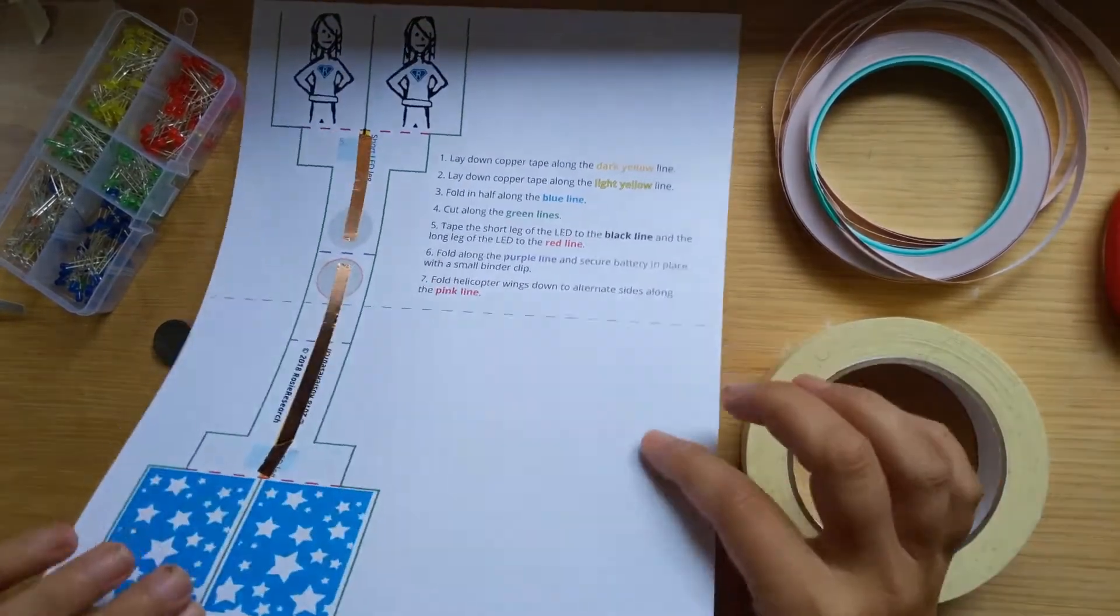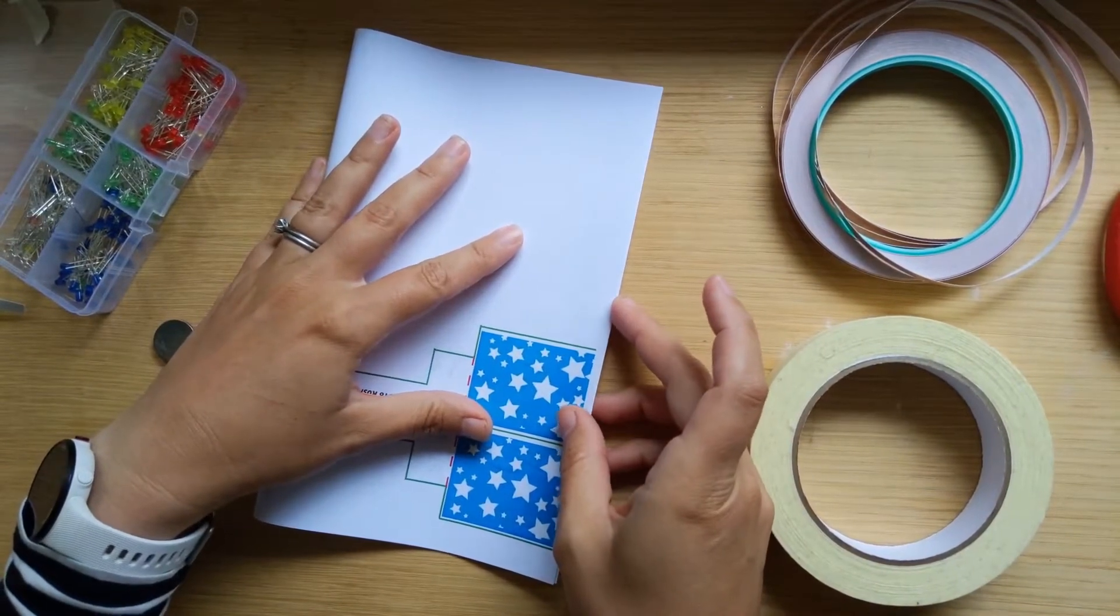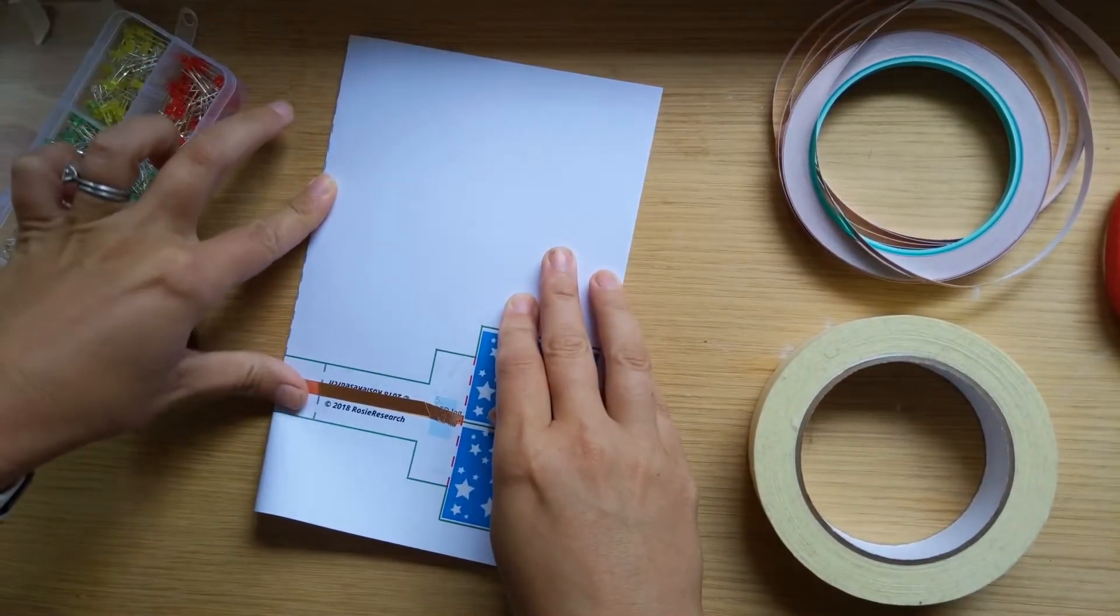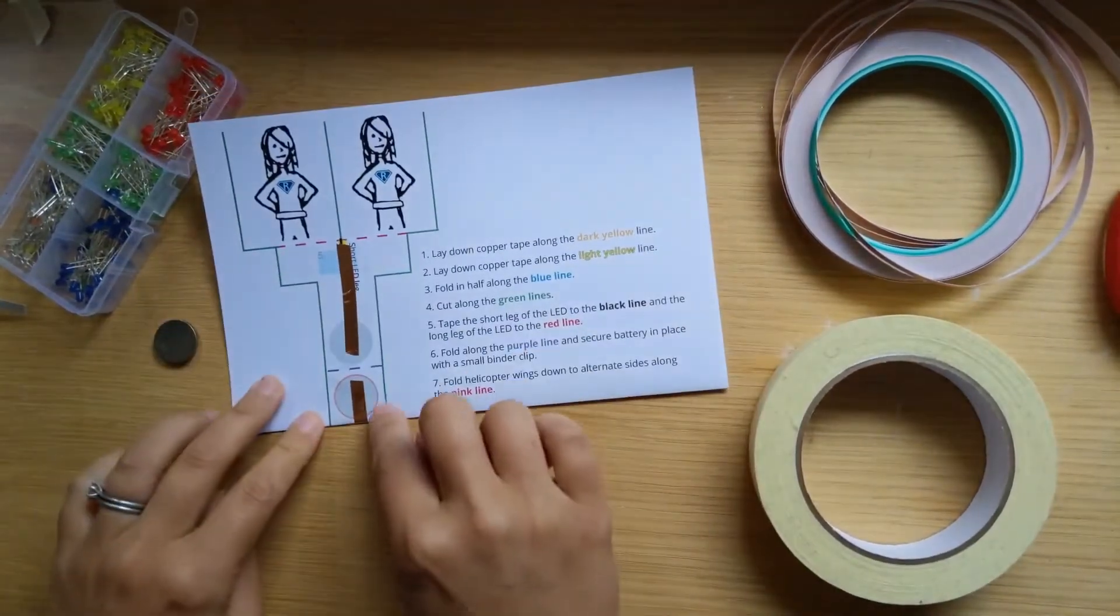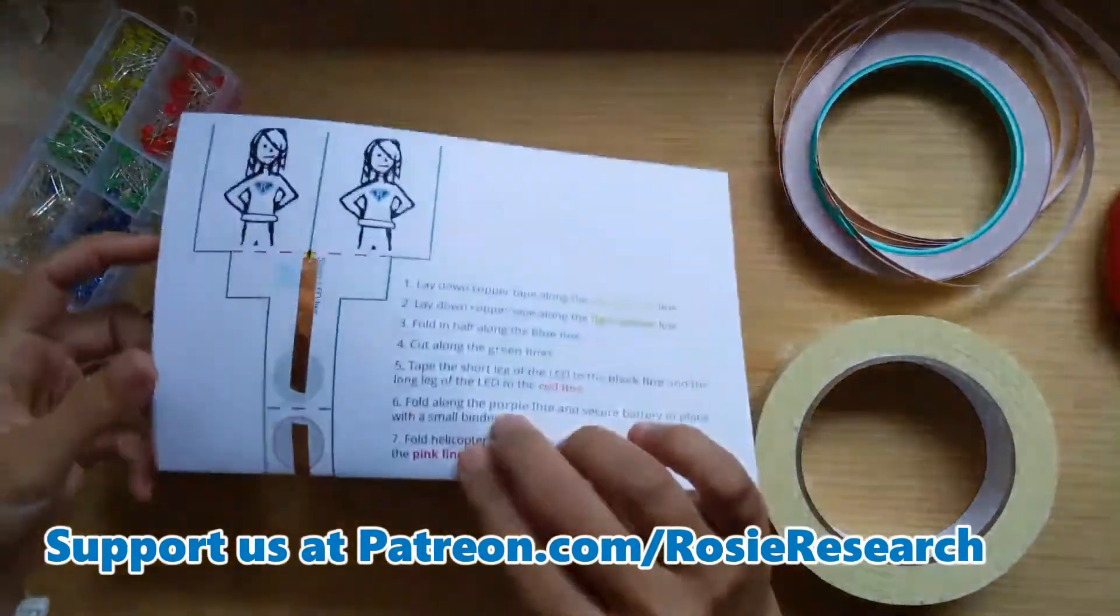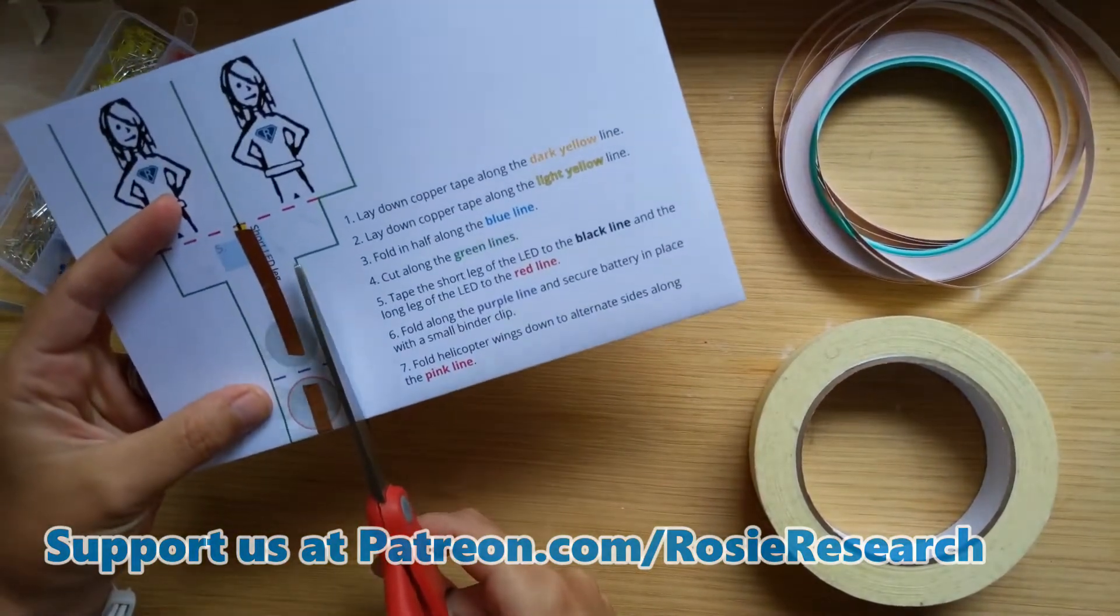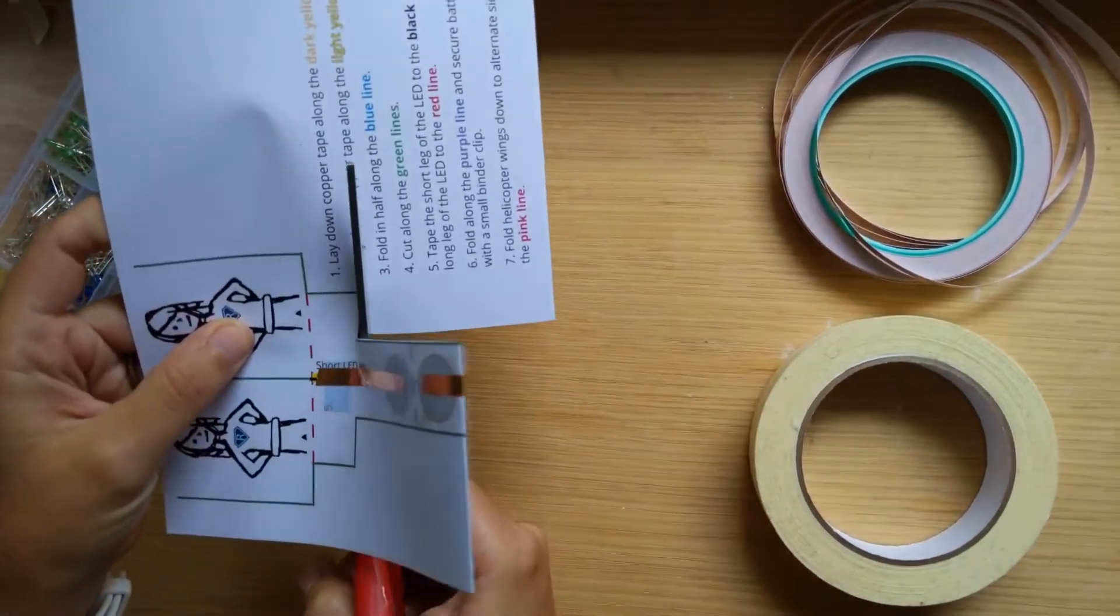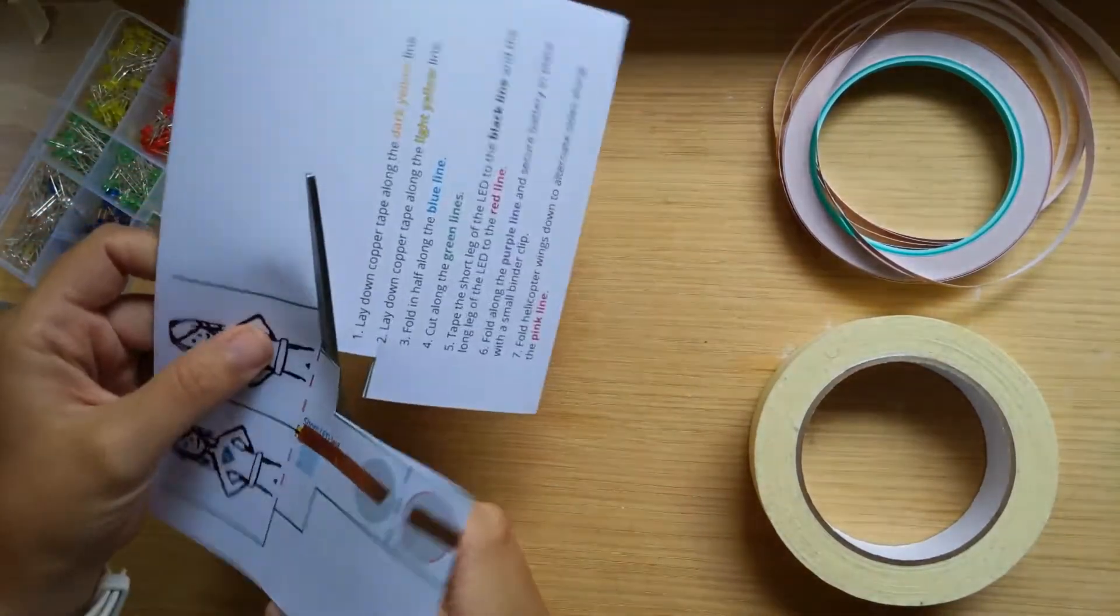We're going to fold it in half along the blue lines. I like to fold it hamburger style so I can still see it. You're going to fold it with the drawings on the outside. And then we are going to cut along these green lines. You only need to do it on one side because they are matched on both sides. So cutting on one side will cut it out on both sides. Just like this. Now you want to do the best you can. It's okay if it's not perfect, it's not going to ruin your project.